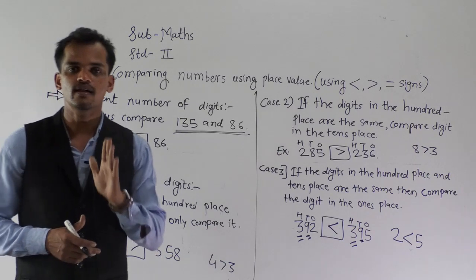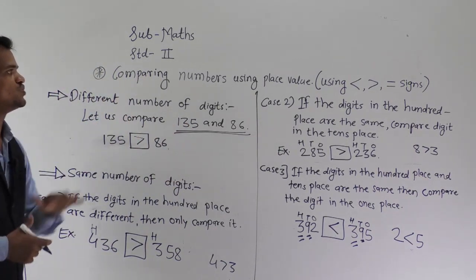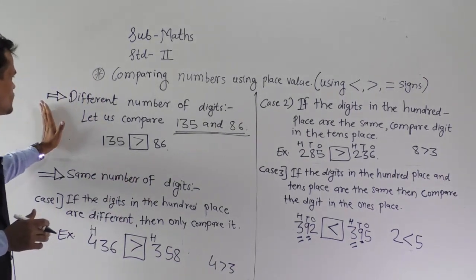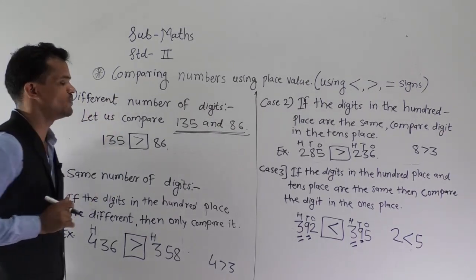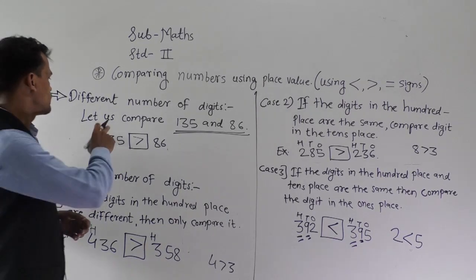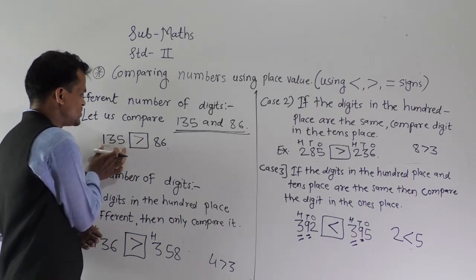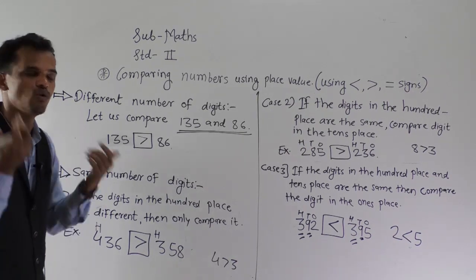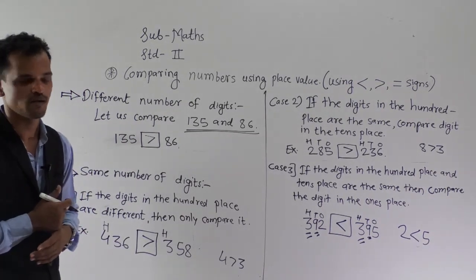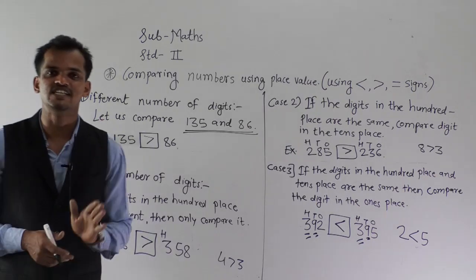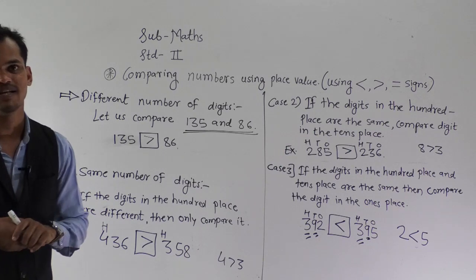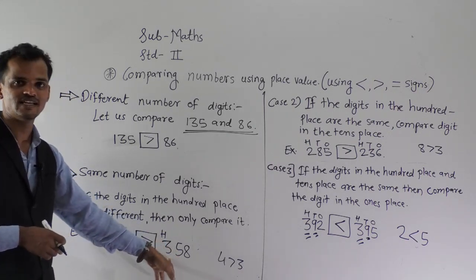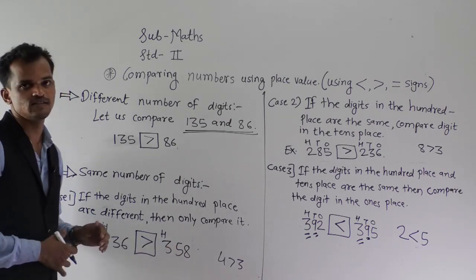Today we have learned comparing numbers using place values. We use the signs bigger than, smaller than, and is equal to. First, if there are different numbers of digits — like 135 and 86 — 135 is a three-digit number and 86 is a two-digit number, so the three-digit number is always greater. The number which has more digits is the bigger number. Always remember this.